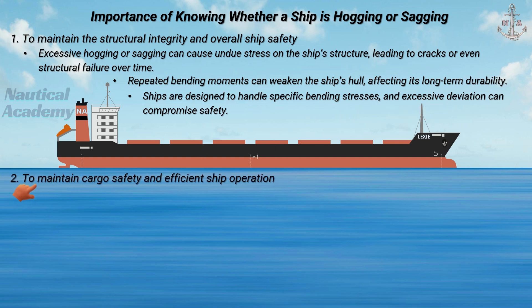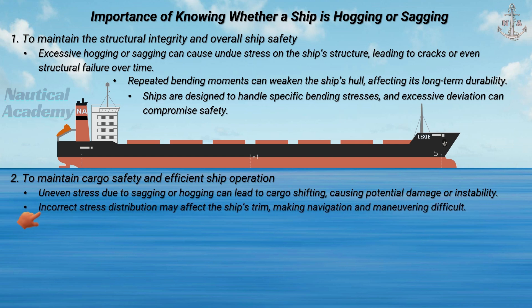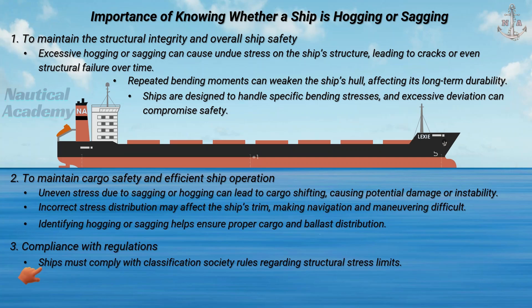Next, to maintain cargo safety and efficient ship operation. Uneven stress due to sagging or hogging can lead to cargo shifting, causing potential damage or instability. Incorrect stress distribution may affect the ship's trim, making navigation and maneuvering difficult. Identifying hogging or sagging helps ensure proper cargo and ballast distribution. Ships must also comply with classification society rules regarding structural stress limits.